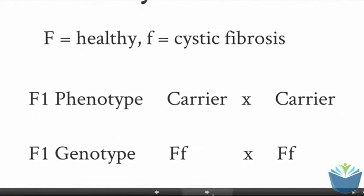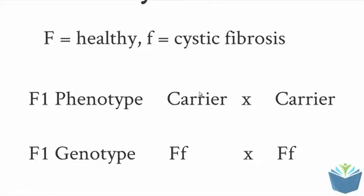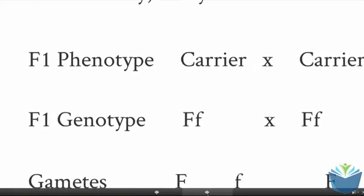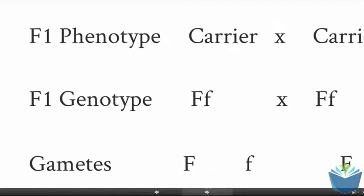The first line that you always write down will be what the alleles are and then the F1 phenotype for the people being crossed. In this case, they're both carriers. You could also possibly put these as healthy. The F1 genotype, that would be big F, small f in both instances because they're carriers.